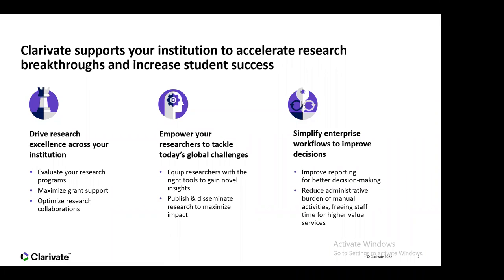Firstly, who we are as Clarivate. Clarivate works in different areas, but most pertinent today is what we do in the academic, research and government space — specifically around research. We support institutions in accelerating research breakthroughs and increasing student success, driving research excellence across institutions, empowering researchers to tackle today's global challenges, and simplifying enterprise workflows to improve evidence-based decision making. Research integrity is obviously very important across all of these areas.